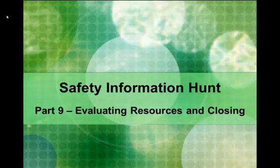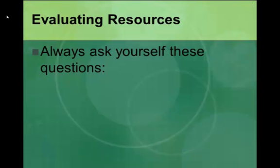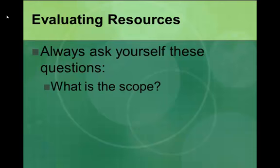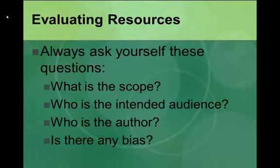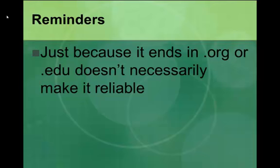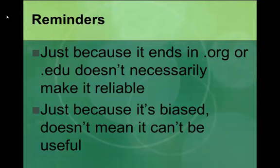Safety Information Hunt Part 9: Evaluating Web Resources and Closing. Always ask yourself the following questions: What is the scope of the webpage — does it answer your question? Who is the intended audience — kindergarten kids, the general public, academics? Who is the author — a journalist, a scientist, a high schooler working on a project? Is there any potential bias — is there some angle the author wants to push? When searching for information on the internet, try to answer these questions. Just because it is a .edu or .org site doesn't automatically ensure reliable information, and just because there might be bias doesn't mean you can't use it — you just need to think about whether the information is right for what you are doing.